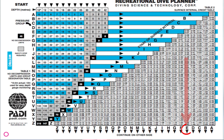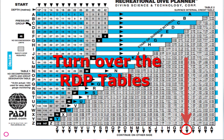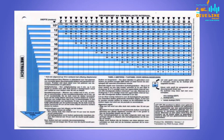Pressure group E means that we still have residual nitrogen in our bodies. That's okay if we've done one dive, but if we're doing more than one dive, we need to account for that residual nitrogen. The first thing we do is flip over the RDP table to the other side.